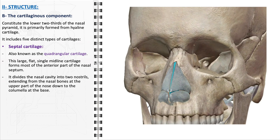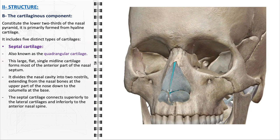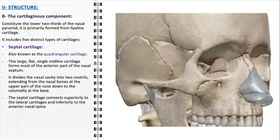Superiorly, the septal cartilage connects to the lateral cartilages. Inferiorly, it attaches to the anterior nasal spine, a bony projection of the maxilla. This connection is crucial in providing a firm base for the cartilage, supporting the lower part of the nose and maintaining its projection and alignment.